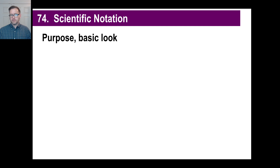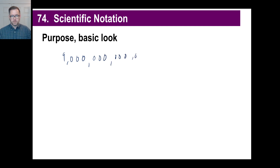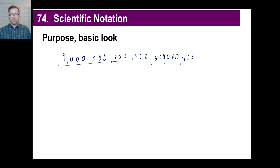You might have something like the distance from one star to another, or maybe that's just the number of disgusting bacteria on your tongue at any one time. You can see how giant it is, but if you're trying to work with those numbers, it gets to be too confusing and too likely that you're going to make a mistake counting all those zeros.